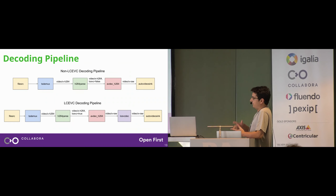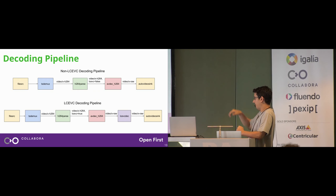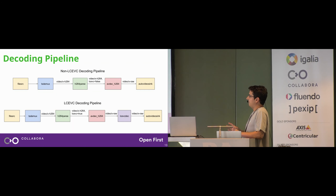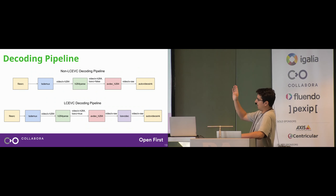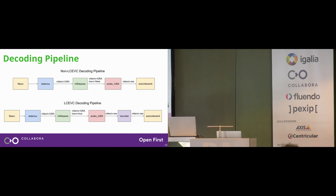From a pipeline perspective, the top example is a decoding pipeline without LC-EVC data, and the bottom one has LC-EVC data. This changes how video is decoded: right until now it was basically demuxer, parser, decoder — now we have an extra layer: demuxer, parser, decoder, and enhancer. That enhancer element reads the metadata from input buffers, enhances the picture, and outputs raw video buffers at high resolution.